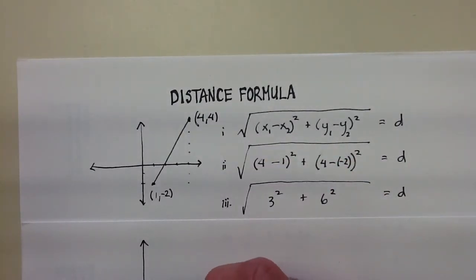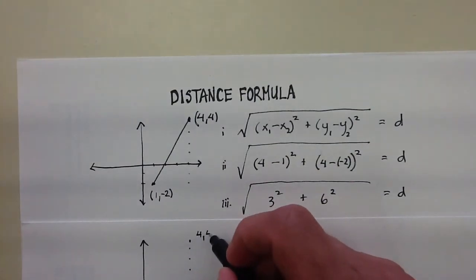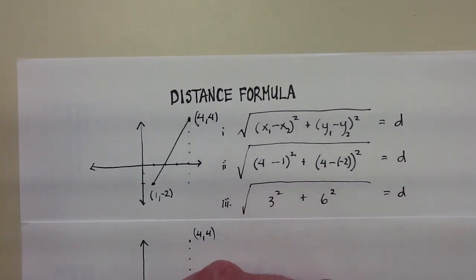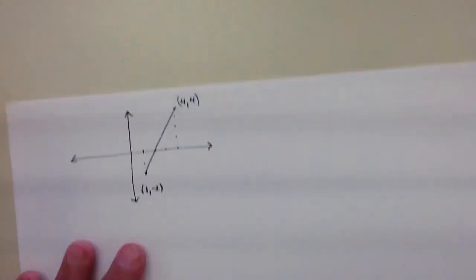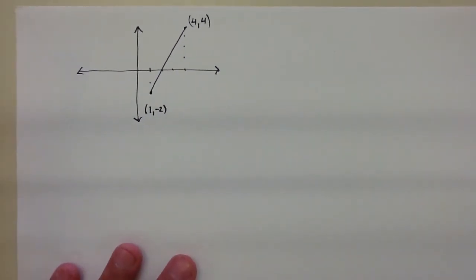We also had 4 and 4. So 1, 2, 3, 4. 1, 2, 3, 4. So there is (4, 4). And we're trying to get that distance.